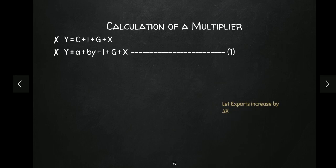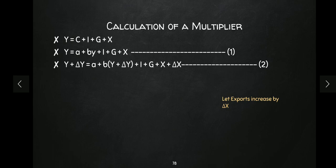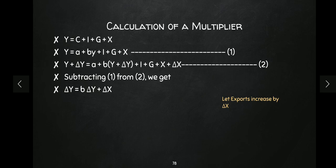Now let's say exports are changing by delta X. I am going to incorporate this into the equation. The equation becomes Y + delta Y, because national income is changing. And where we have X, we write X + delta X, because exports have changed by delta X. When we subtract equation one from equation two, we are left with only the delta terms: delta Y = b(delta Y) + delta X.